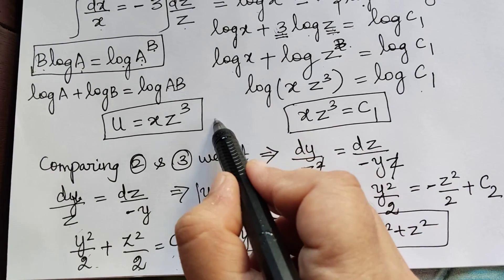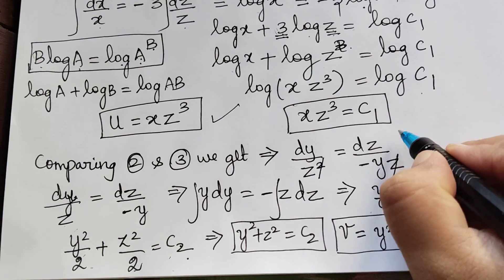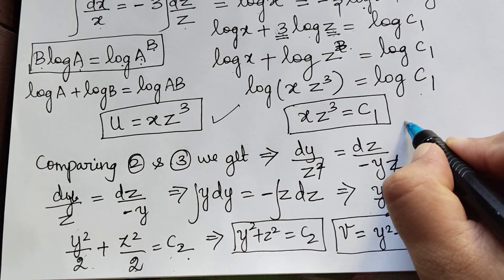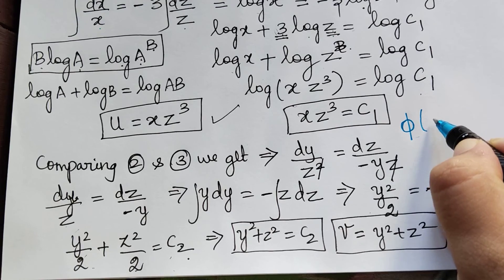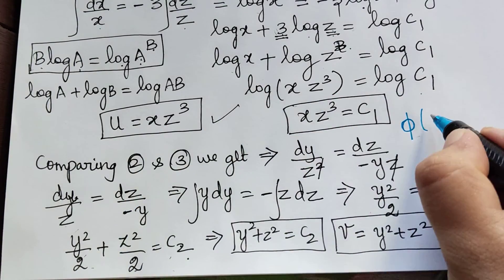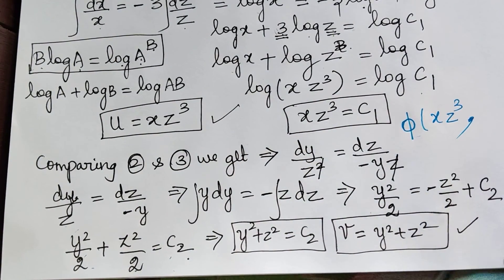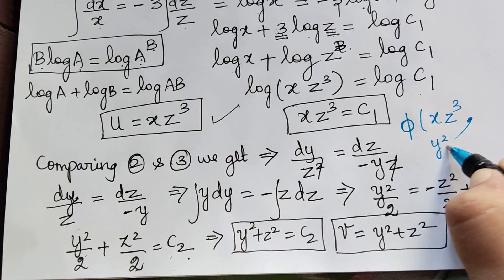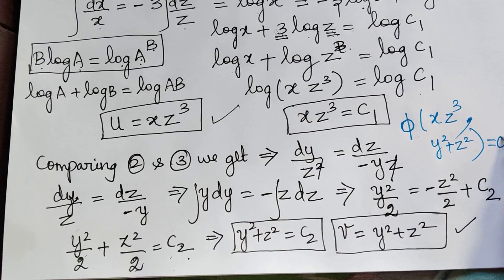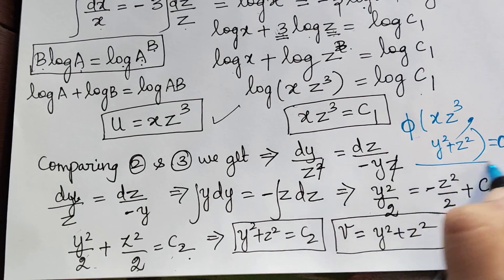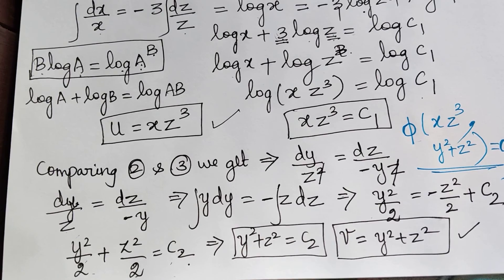Therefore we have obtained solution u and solution v, and hence the general solution is given by φ(u, v) = 0, that is φ(xz³, y² + z²) = 0. Hope you have understood this problem. Thank you.